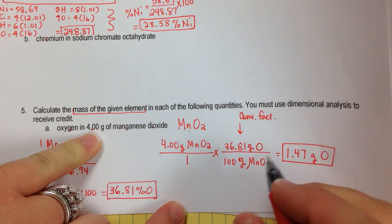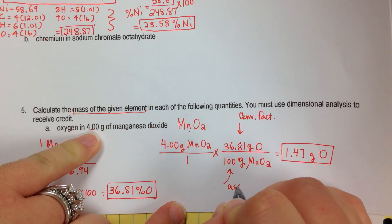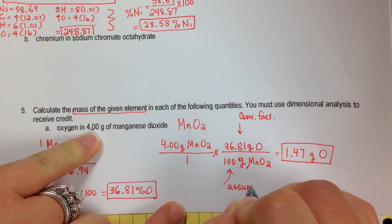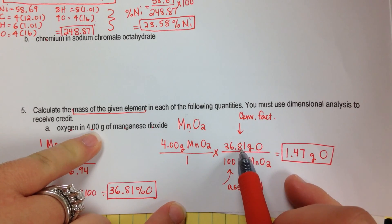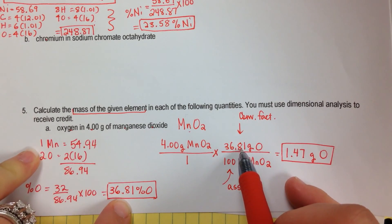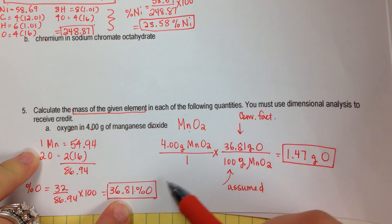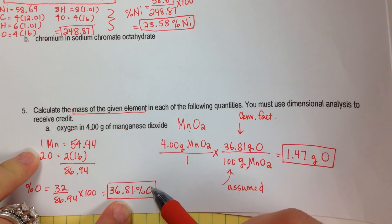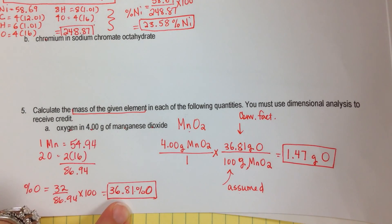That's the relationship between the percent of oxygen and the percent composition we found. The conversion factor using the 100-gram assumption lets us apply percent composition directly to any given mass via dimensional analysis.